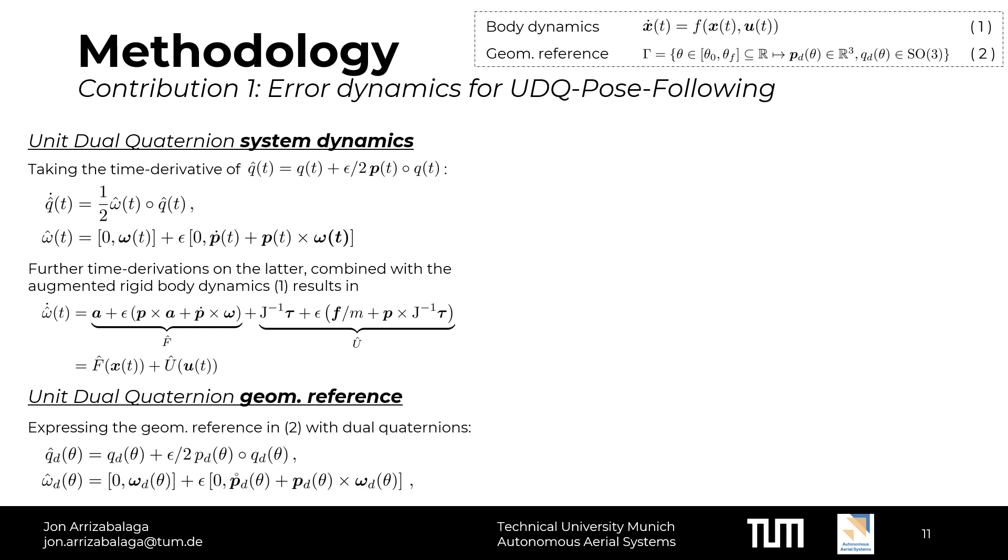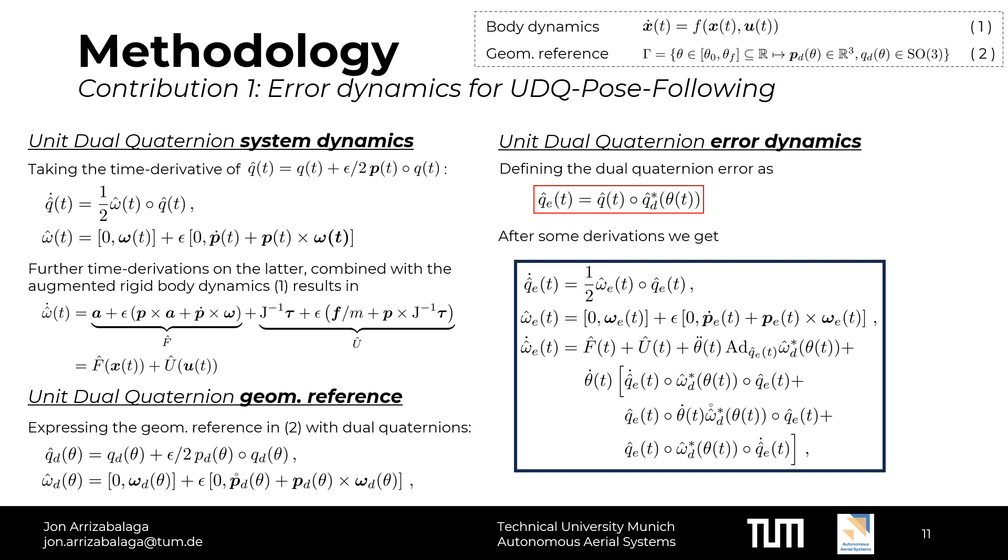In a similar way, we can represent the parametric geometric reference with unit-dual-quaternions. Despite having successfully transformed the rigid body dynamics and the geometric reference from the standard pose representation to the dual-quaternion representation, in order to design the control law, we are interested in the error dynamics. For this purpose, we define the dual-quaternion error by the formula within the red box. Combining it with the unit-dual-quaternion-based system dynamics and the geometric reference, after some derivation, we finally get the dual-quaternion-based error dynamics. When compared to the tracking counterpart, additional terms arise. As we will see in the following slide, these differences will play a significant role in the design of the control.